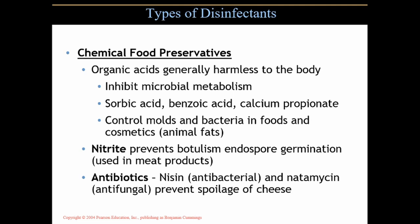Chemical food preservatives — organic acids, or carbon-based acids, are generally harmless to the body. They inhibit microbial metabolism. Some you might see on a food label: sorbic acid, benzoic acid, and calcium propionate. They control molds and bacteria in foods and cosmetics. Cosmetics have a lot of animal fats making them susceptible to bacterial contamination, so these acids help reduce microbial growth. Nitrite prevents botulism endospore germination and is used in meat products. Nisin is antibacterial and natamycin is an antifungal — both prevent spoilage of cheese.